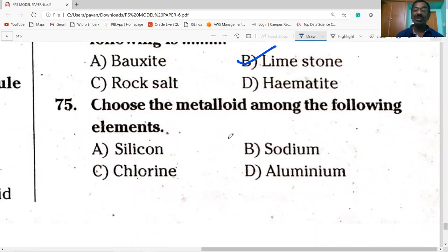Today's last question: choose the metalloid among the following elements. Silicon is the metalloid. Remaining sodium and aluminium are metals. Chlorine is non-metal. Silicon is the metalloid. Okay, thank you very much. I wish you all the best. Please like and share my videos.